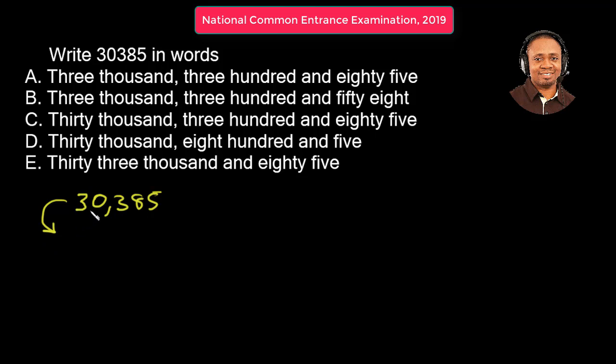So 30, you can see this is 3, 0, 0, 30,000, then for 300, 300, then 80, then 5. So this is what is added up that gave us the original number.